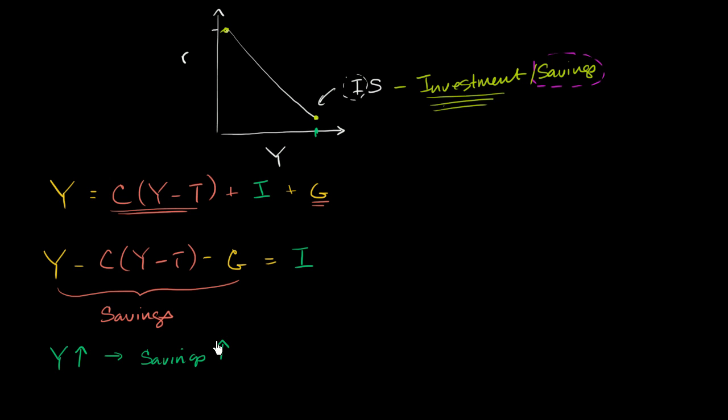And if savings goes up, that means we have more loanable funds. There's more money to lend. And if there's more money to lend, what's going to happen to interest rates? Well, interest rates are just the price of borrowing money, the price of money. So if you have more of something, the price of that thing goes down. So if savings goes up, then real interest rates go down. So if you have a high GDP, you're going to end up with low real interest rates.